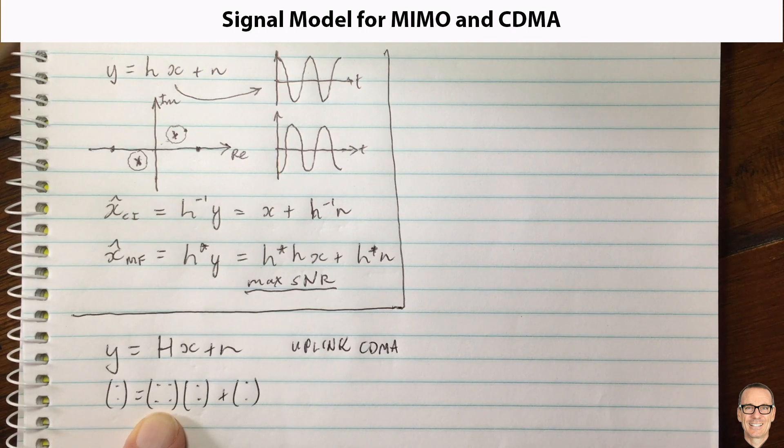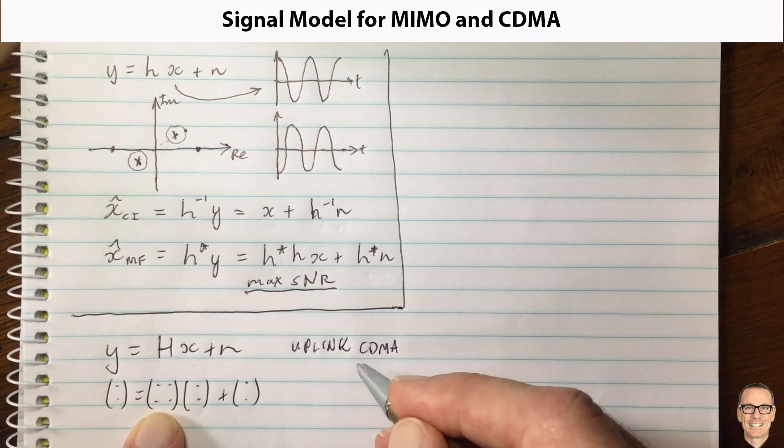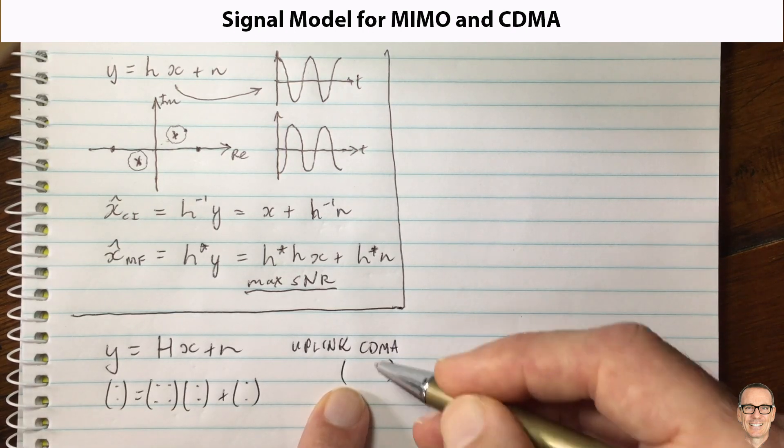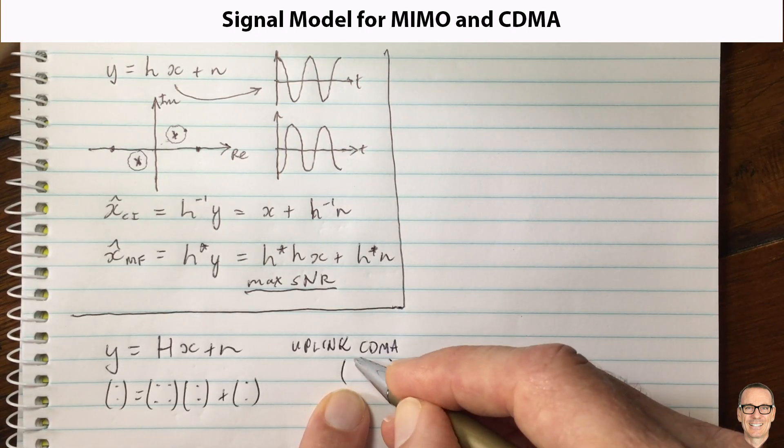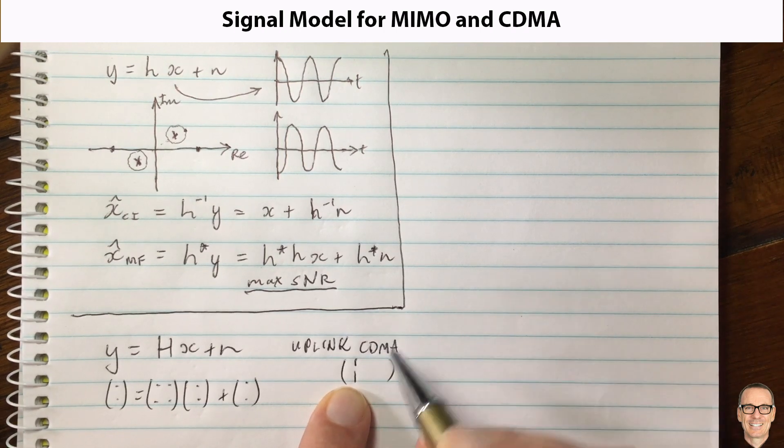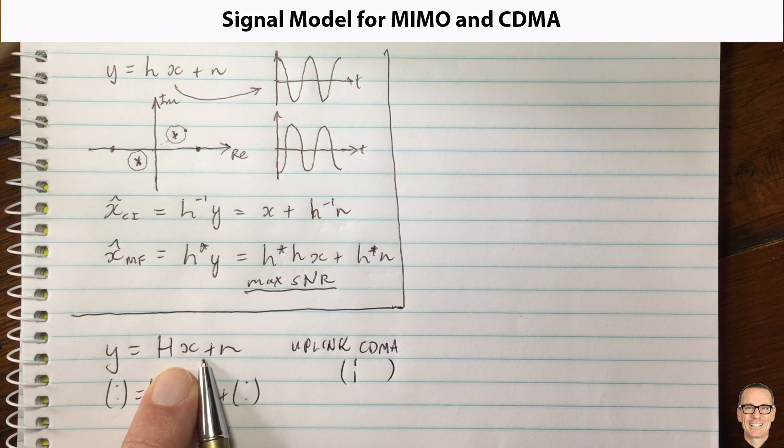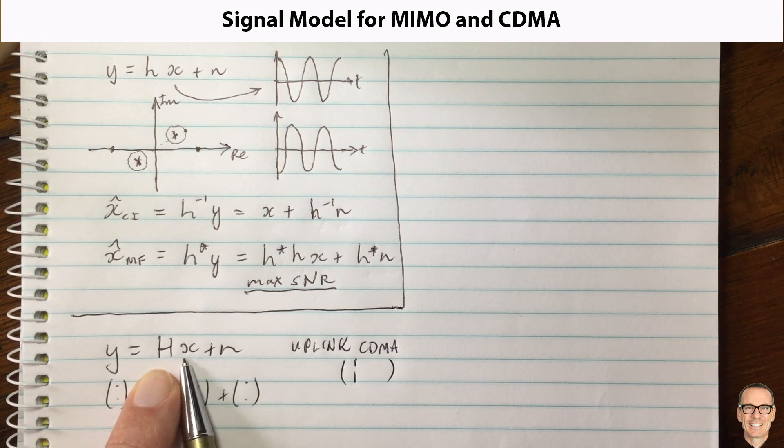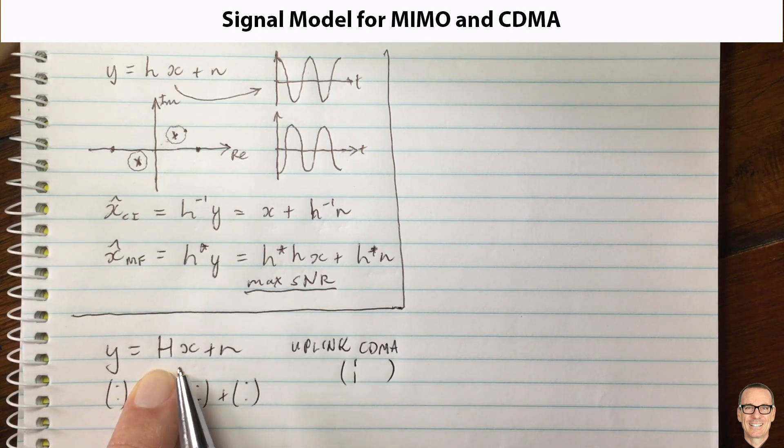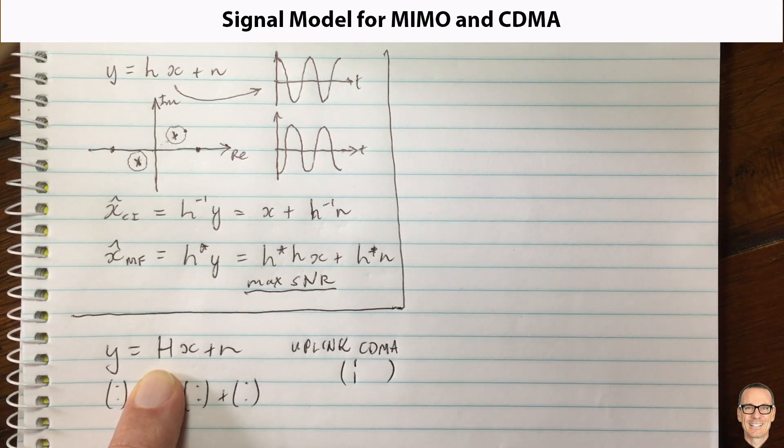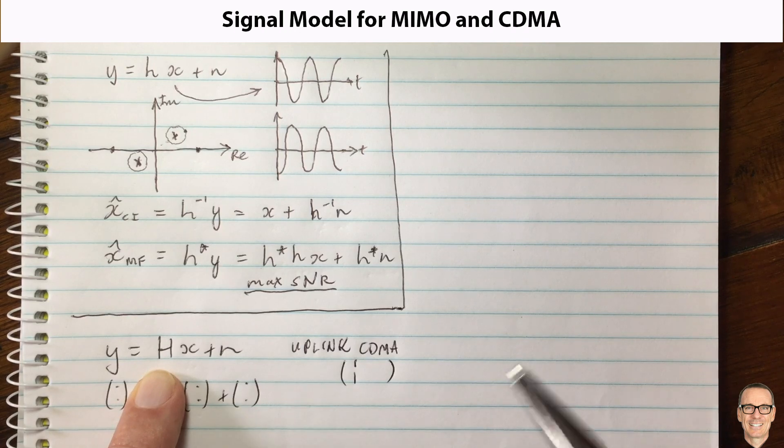So for example, one example would be of H in this case here, where we have H equals the first spreading sequence is the vector in the first column. So let's say one. Just to remember, in CDMA you send a symbol in and you multiply by a spreading code which has a higher chip rate.